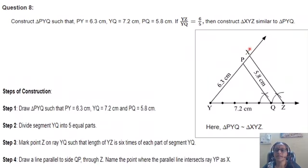These are your required triangles: PyQ similar to triangle XYZ. Ratio is given YZ upon YQ is equal to 6 by 5. Triangles are similar.